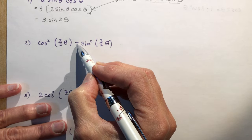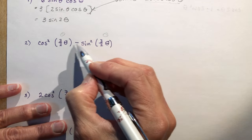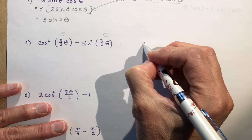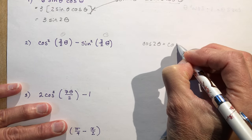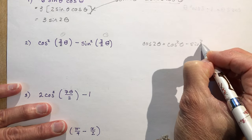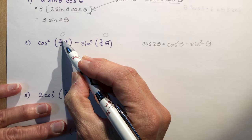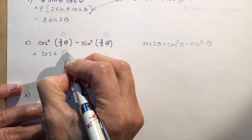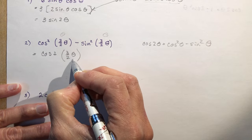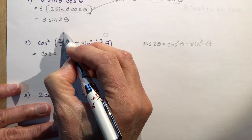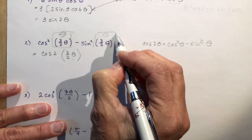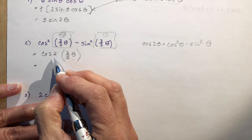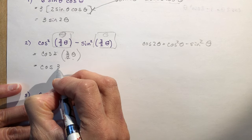Next: cos squared (3θ/2) minus sine squared (3θ/2). Think of 3θ/2 as theta in the formula. Cos 2θ = cos squared θ minus sine squared θ, so this equals cos of 2 times (3θ/2). Multiplying 2 × (3θ/2) cancels the 2, giving cos 3θ.